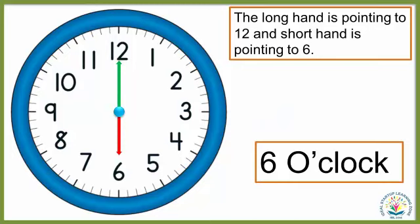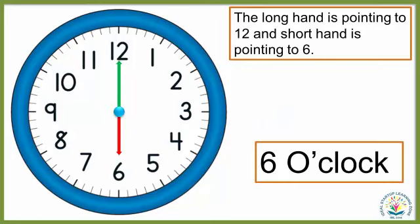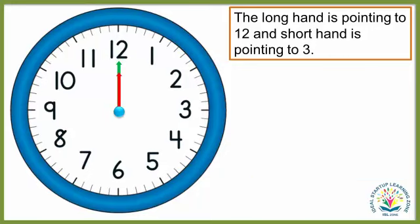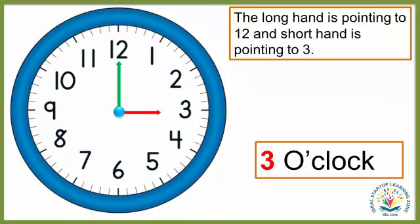When the long hand is pointing to 12 and the short hand is pointing to 12, it is 12 o'clock. When the long hand is pointing to 12 and the short hand is pointing to 3, it is 3 o'clock.